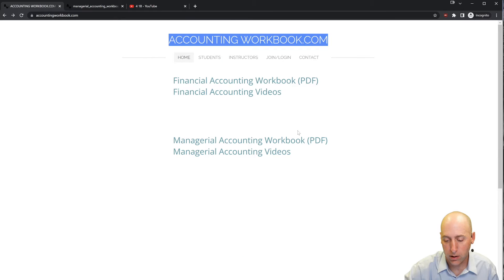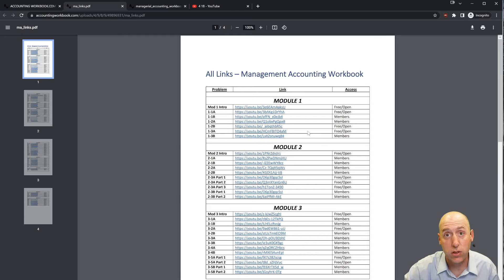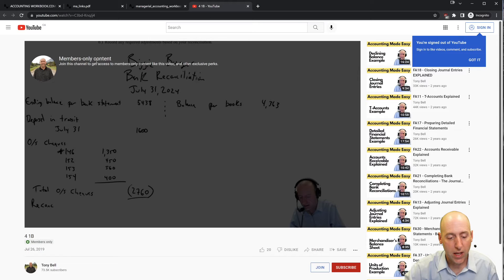Also found on the website are links to all of my accounting videos, not just the ones here on YouTube that are publicly listed. They're also members-only videos. About 40% of my videos are free and open. The other 60% are for members. If you click one of the members links, it'll take you to a page that looks like this as members-only content. If you'd like access to that content, just hit the join button.